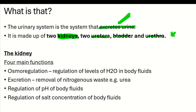The first function is osmoregulation — that is, the regulation of water levels in the body fluids. If there is too much water in your body it needs to be reduced; if there is less water it needs to be increased. You'll also encounter this in the homeostasis topic, but it is closely related to excretion. Osmoregulation is the control of water levels inside your body, and it is carried out by the kidney.